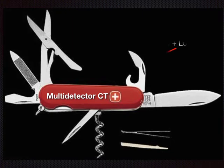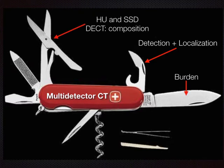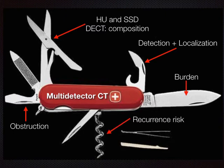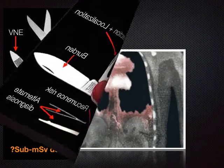Multi-detector CT is a good multipurpose tool. We're very good at detecting and localizing large stones, less precise for small calcifications peripherally without hydronephrosis. We're good at stone burden assessment, can provide biomarkers for management, assess obstruction, and potentially look at recurrence risk. Virtual non-enhanced imaging—we're not there yet because we're still missing small stones less than 2 to 3 millimeters. We are good at alternate diagnoses in the ER. At some point in the future, we may be able to deliver all this information at a sub-millisievert dose, but that is not yet possible.